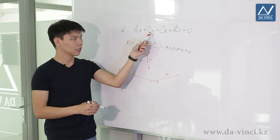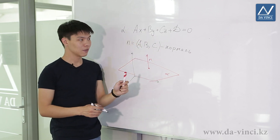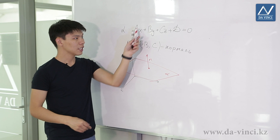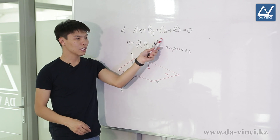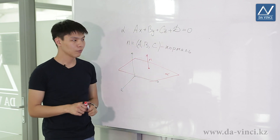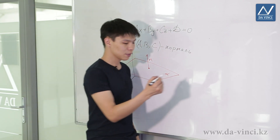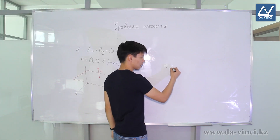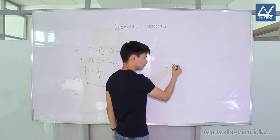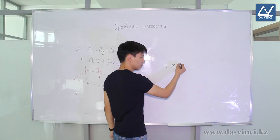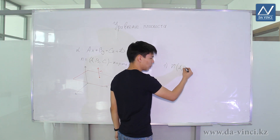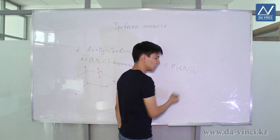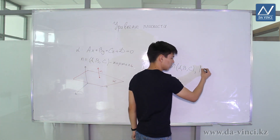Thus, any plane is defined by such a ratio, and vice versa — such a ratio defines a certain plane. Depending on what data we know, we can draw up different equations of the plane. In particular, this equation is called the general equation of the plane. We can also draw up an equation for a plane if we have a normal — that is, a vector perpendicular to our plane — and some point which this plane belongs to.